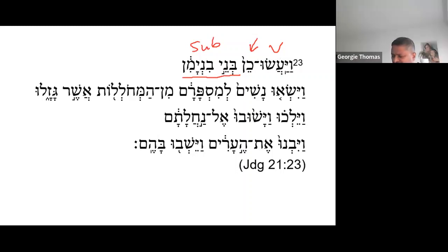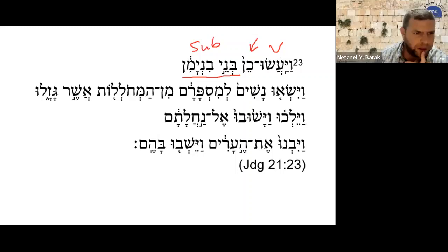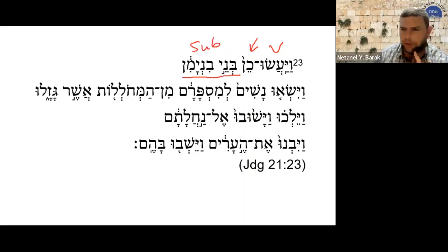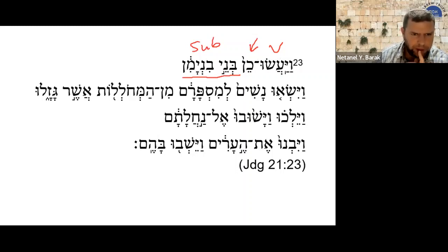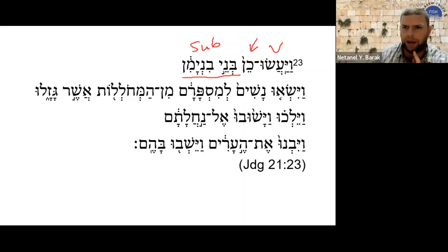The word ken means so or thus, oftentimes in the sense of 'in this way,' 'in this manner,' 'in this fashion.' So, chen — 'and they did so,' 'this is what they did.' That's the word ken.